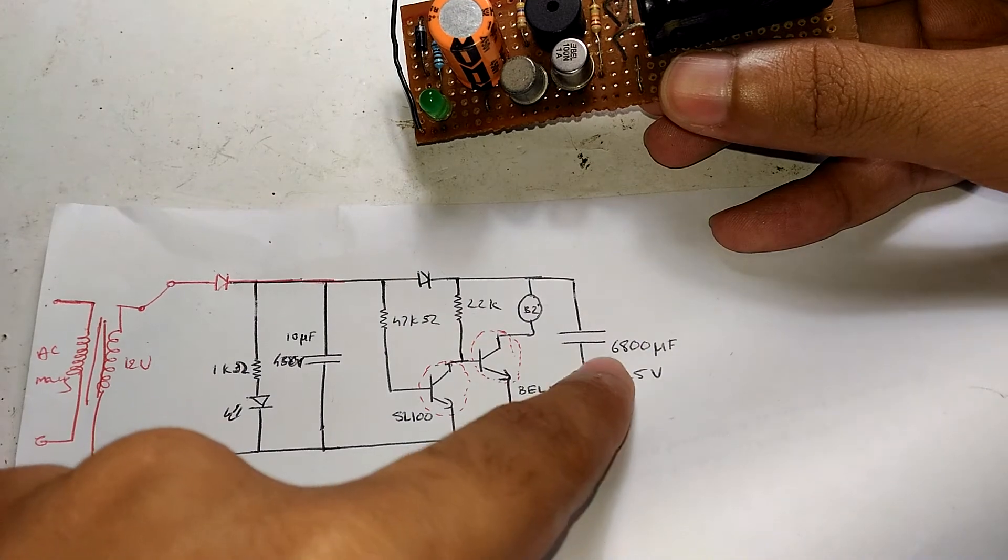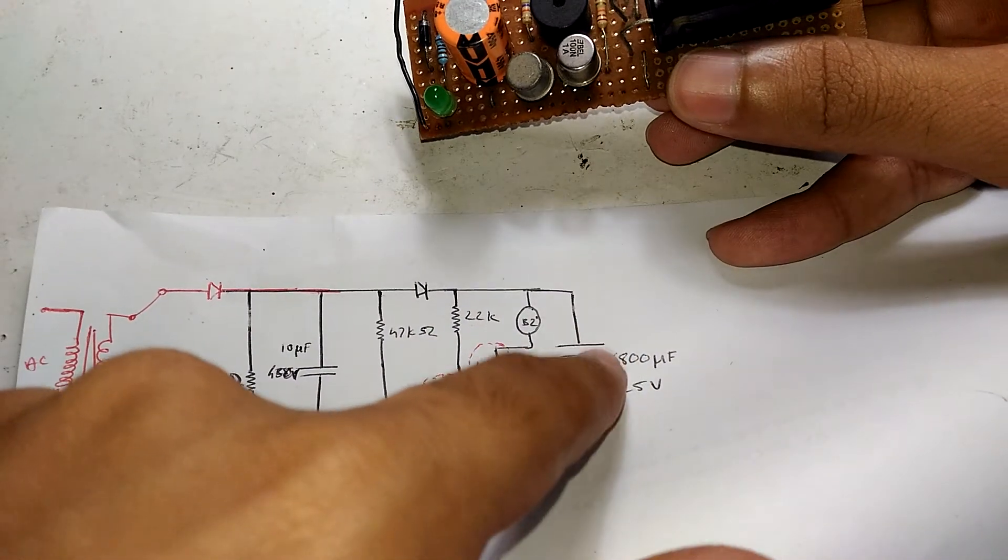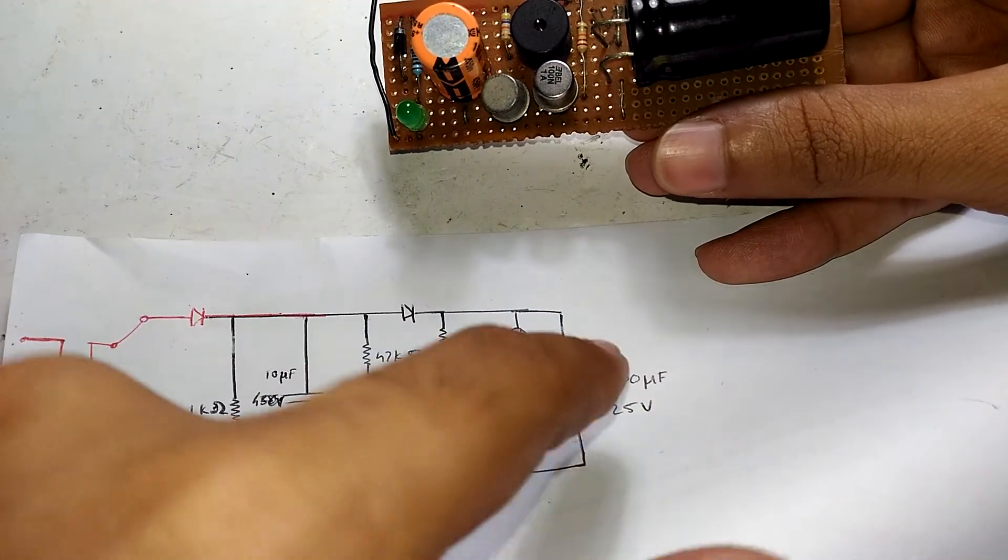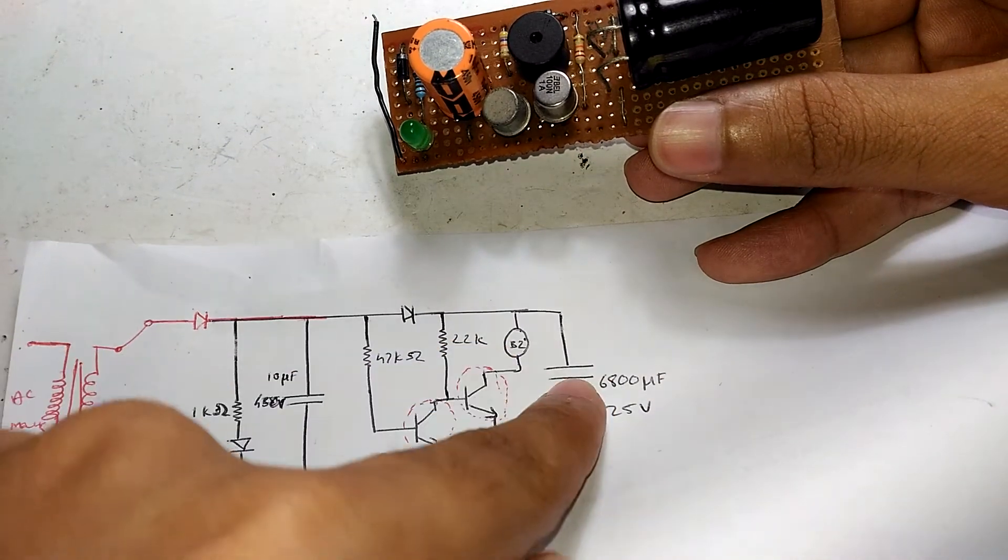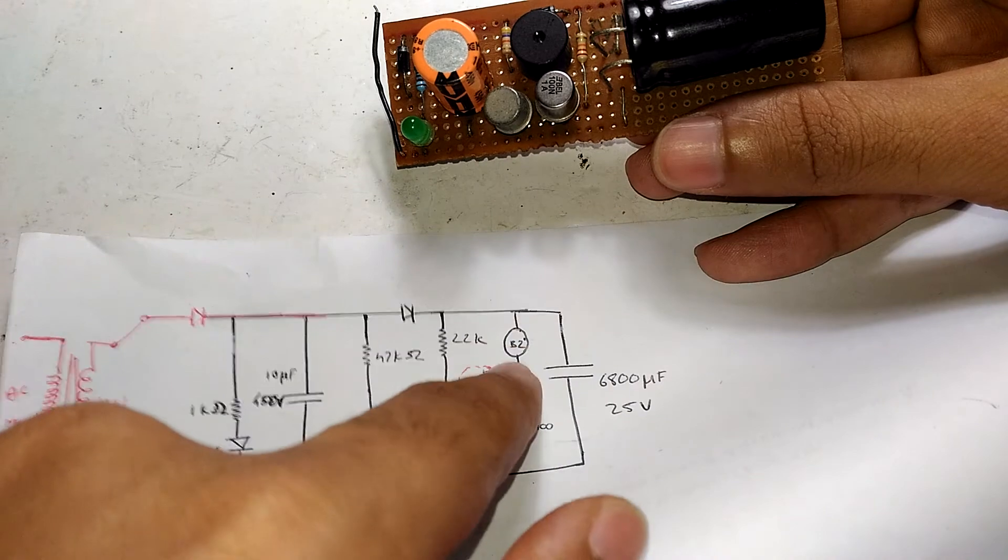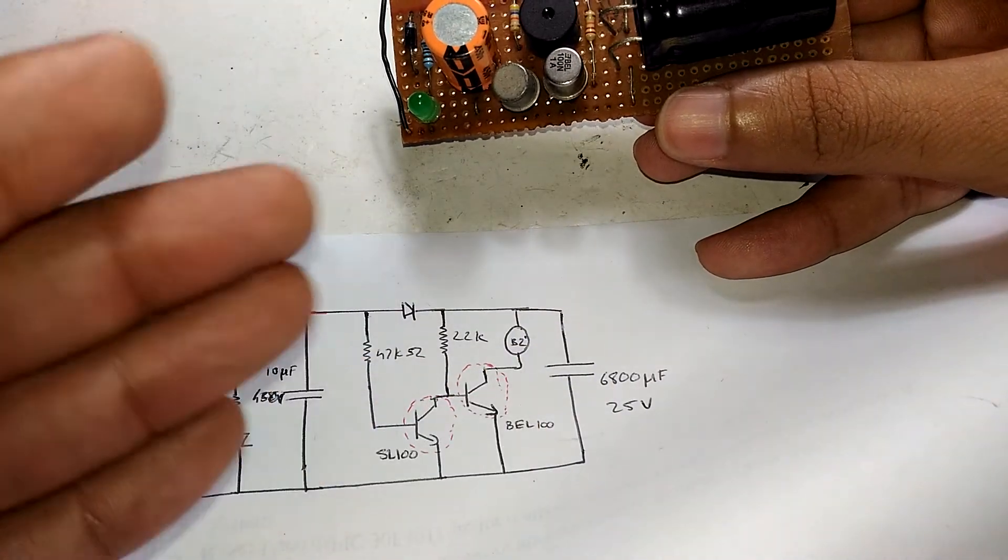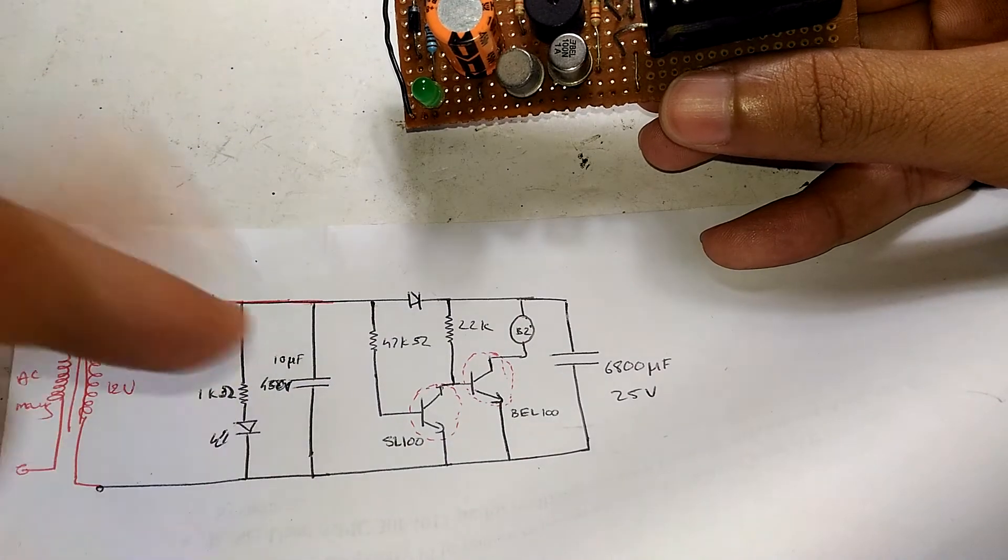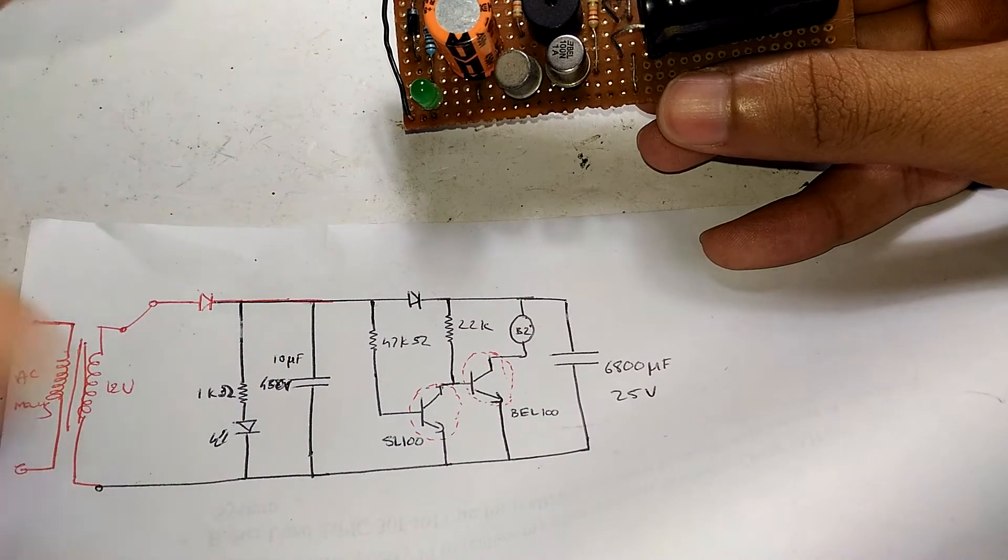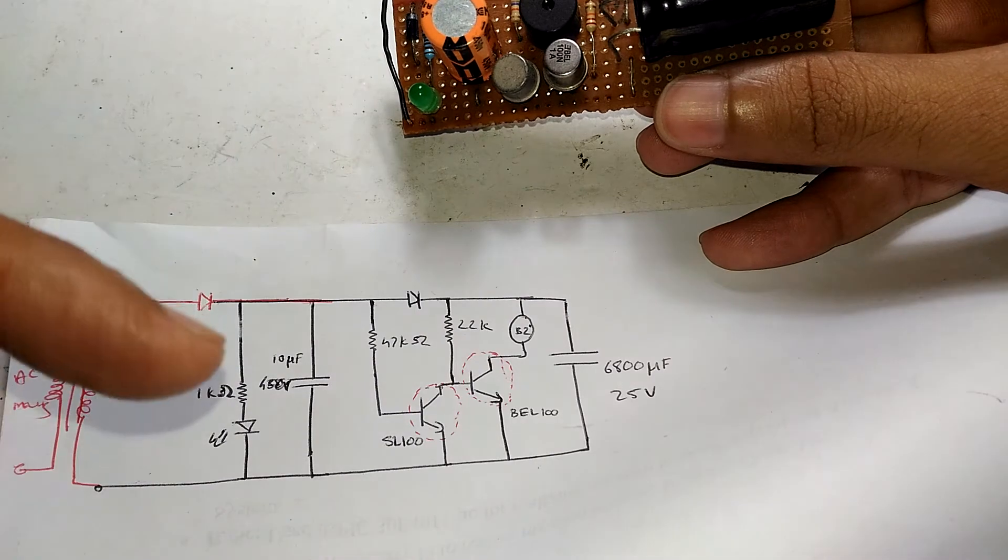When this is turned on, the buzzer gets connected to the negative of this capacitor, which is acting as a battery. It's basically a buzzer connected across a battery, which makes it sound. That's how this thing works.